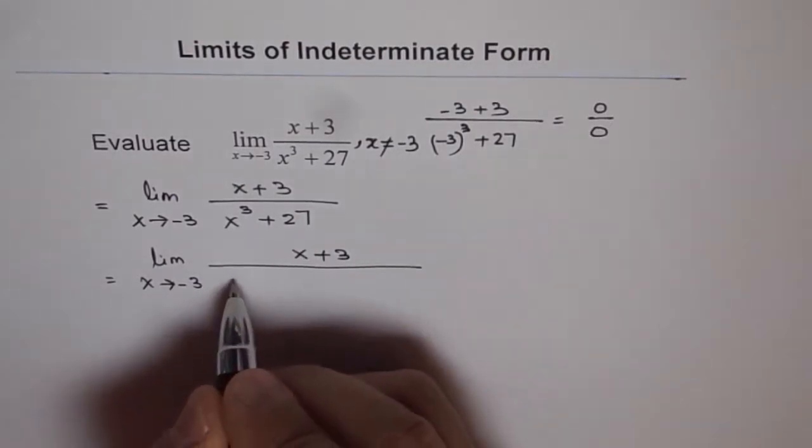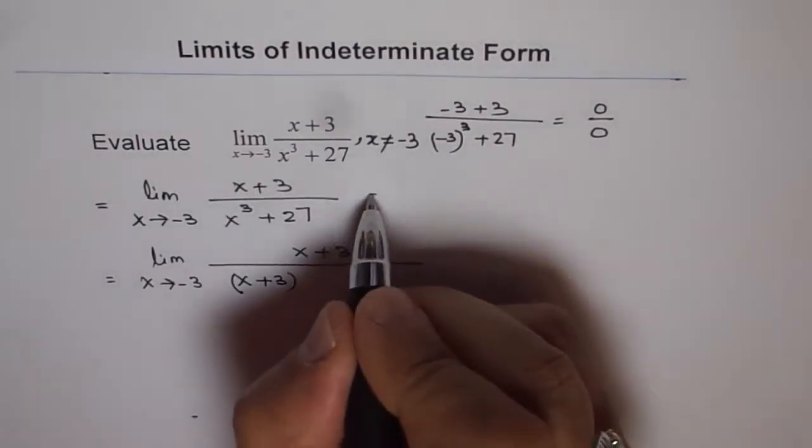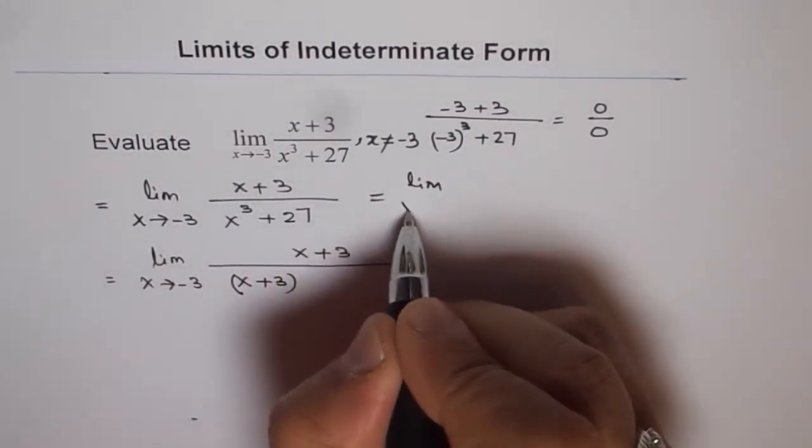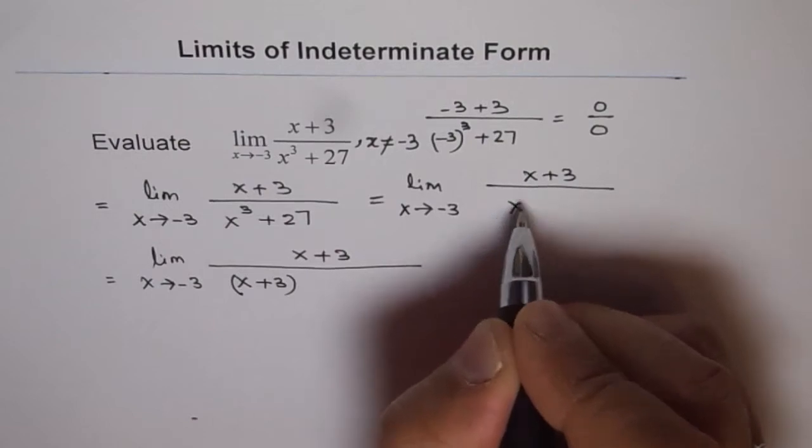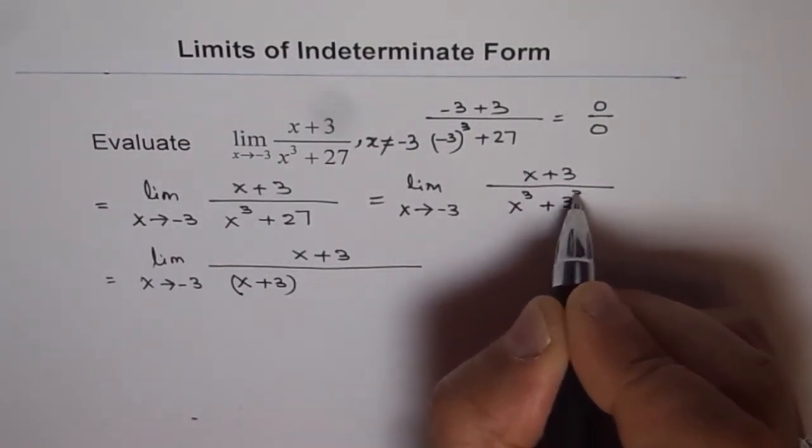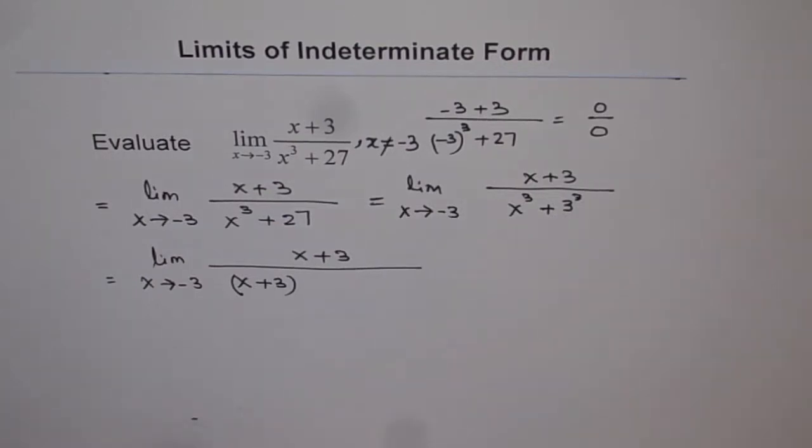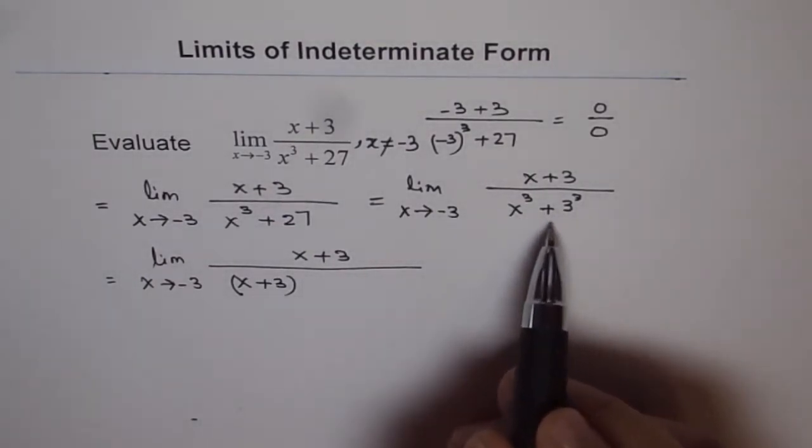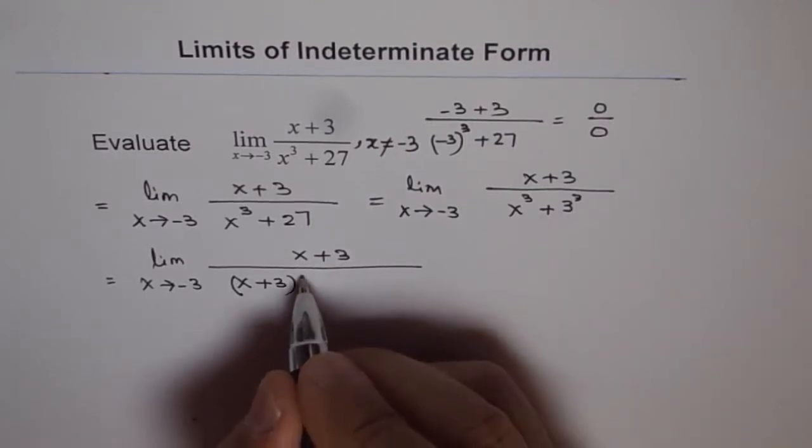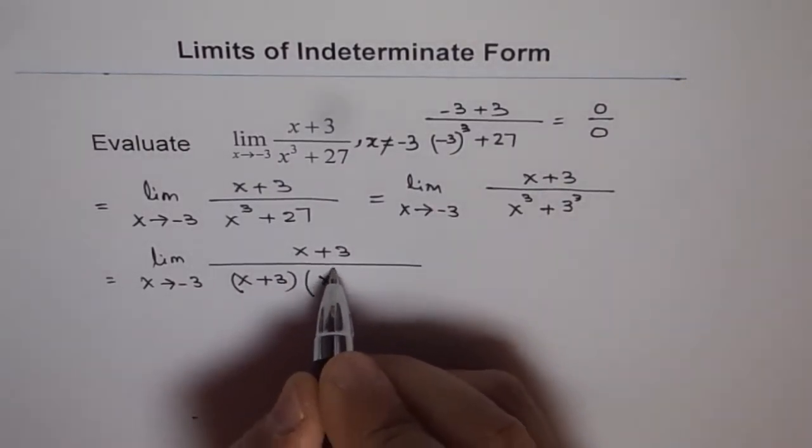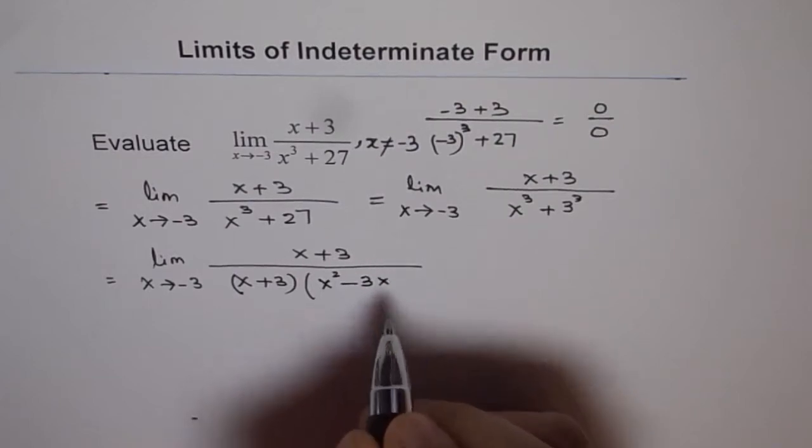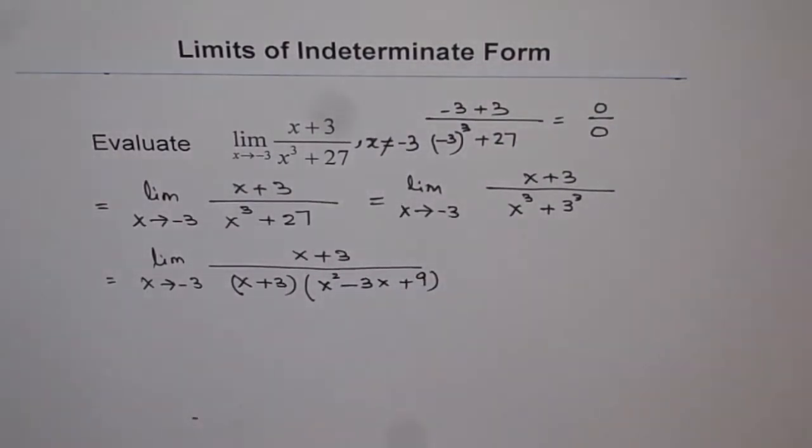So it could be written as x plus 3 times... Let me write it here clearly. We have x approaches minus 3, x plus 3 in the numerator, and x cube plus 3 cube in the denominator. 27 is 3 cube. We are expanding this using the formula a cube plus b cube, which is a plus b times a square minus ab plus b square. So we'll expand it using the formula, and we get x plus 3 times x square minus 3x plus 3 square, which is 9. So that's what we get.